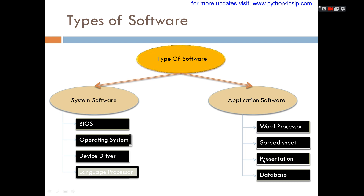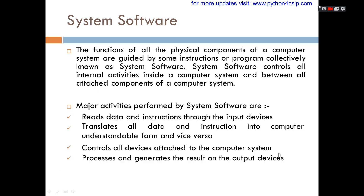Now, what is system software? The function of all the physical components of computer systems are guided by some instructions or programs, collectively called system software. The actions of system software include reading data and instructions through input devices — for example, keyboard and mouse. The system software first has to boot up and wake up the system.